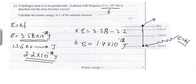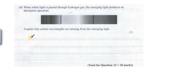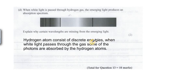Let's see the next part, part D. When white light is passed through hydrogen gas, the emerging light produces an absorption spectrum. Explain why certain wavelengths are missing from the emerging light. It's a typical question that generally comes in exams and it deals with the discussion of energy levels and absorption of photons. Hydrogen atoms consist of discrete energies, or you can say discrete energy levels. When white light passes through the gas, some of the photons are absorbed by the hydrogen atoms. Those photons which are absorbed - we have missing lines for these absorbed photons.